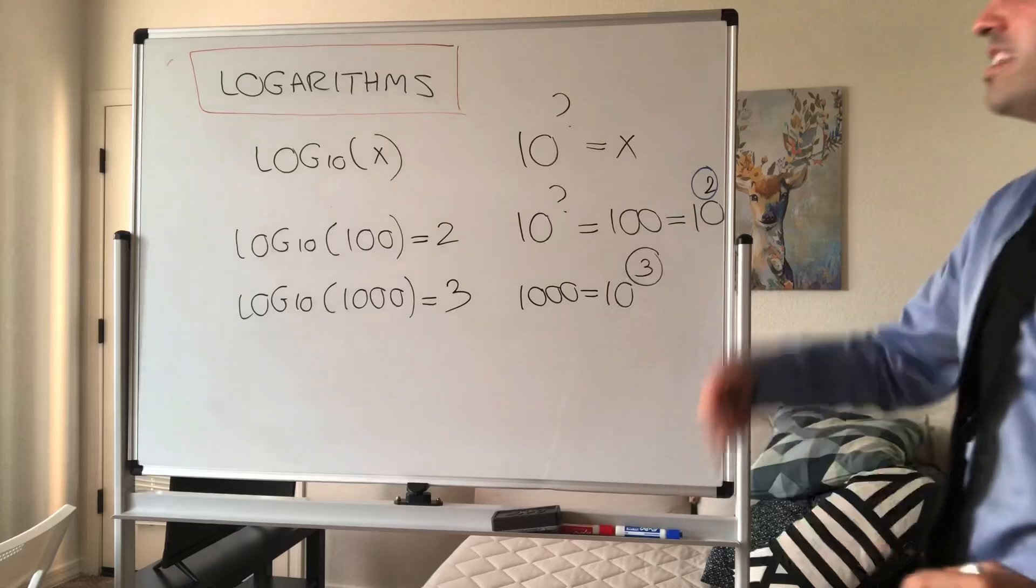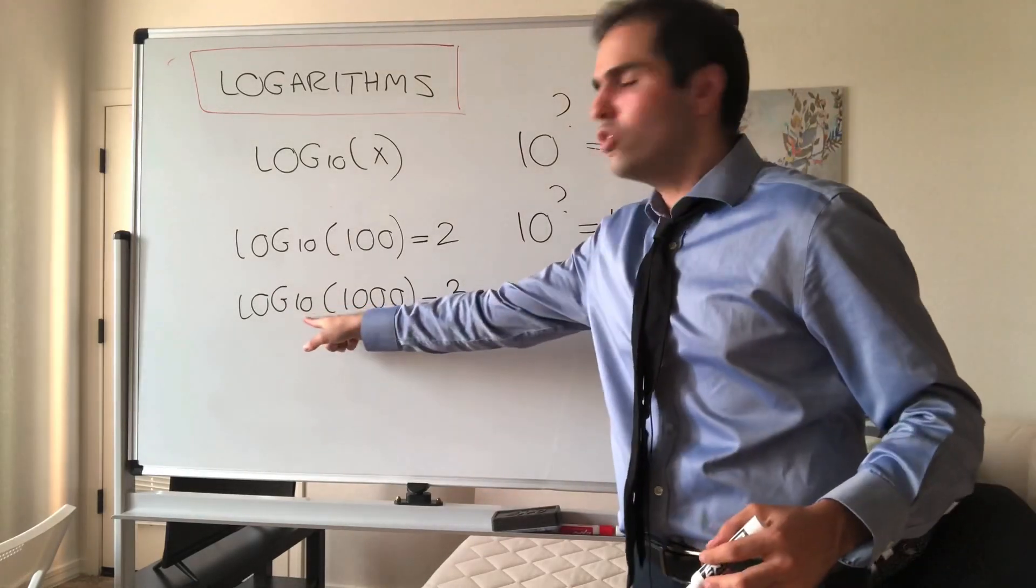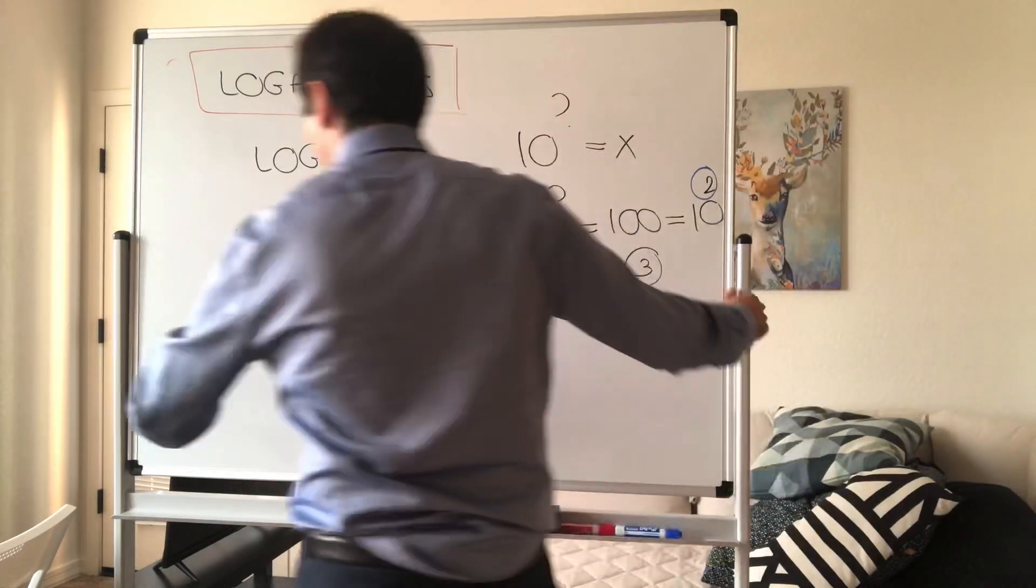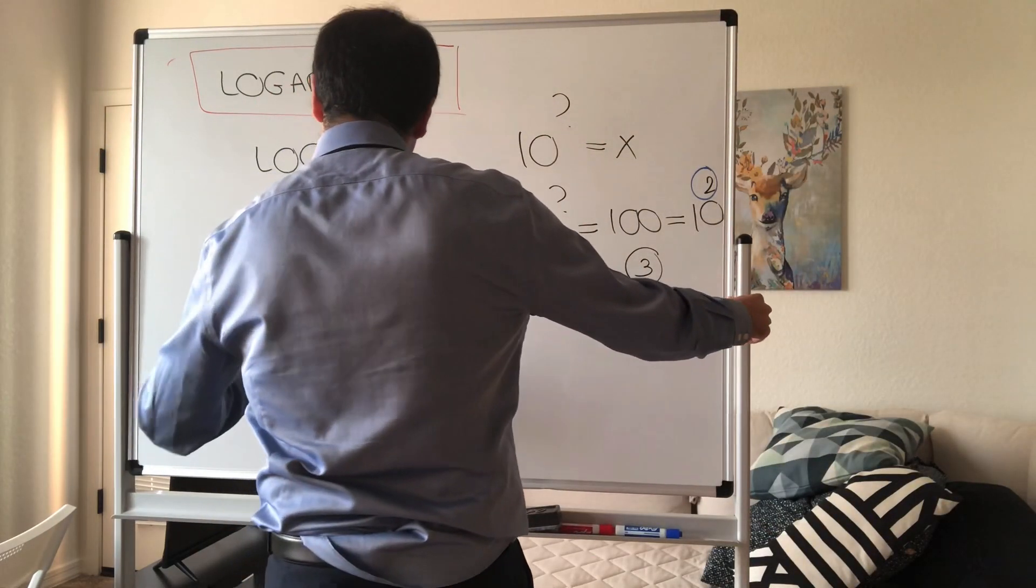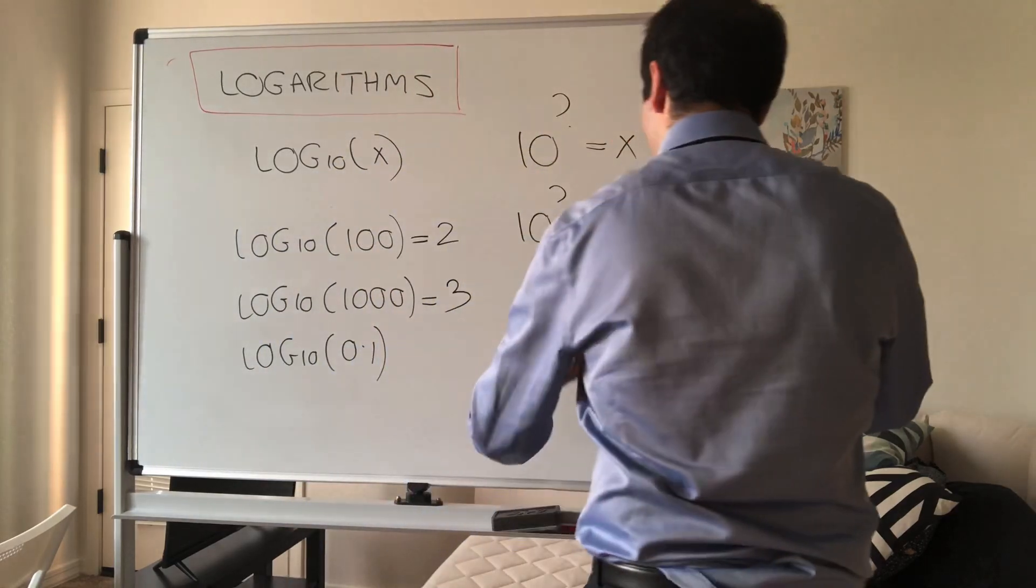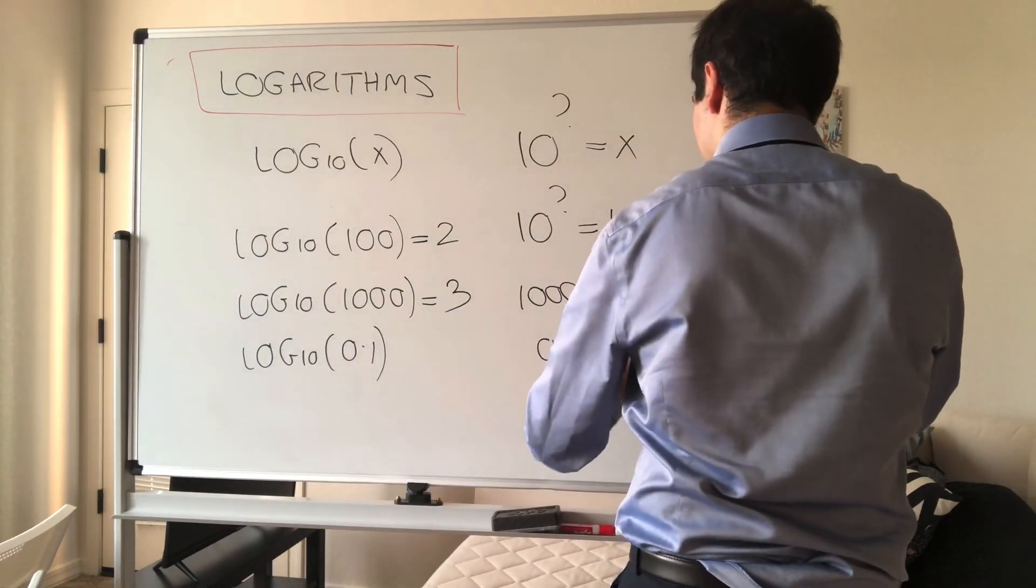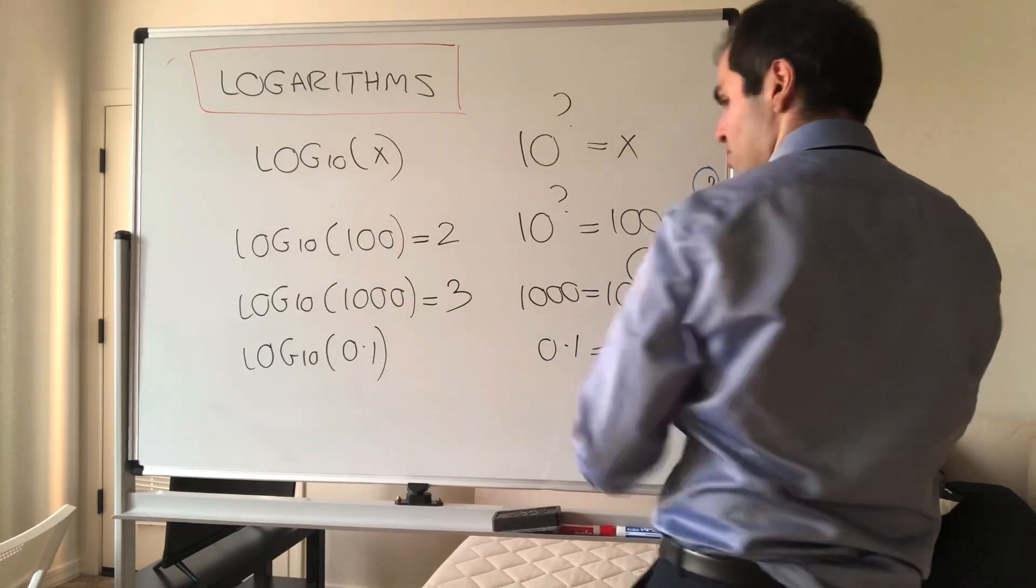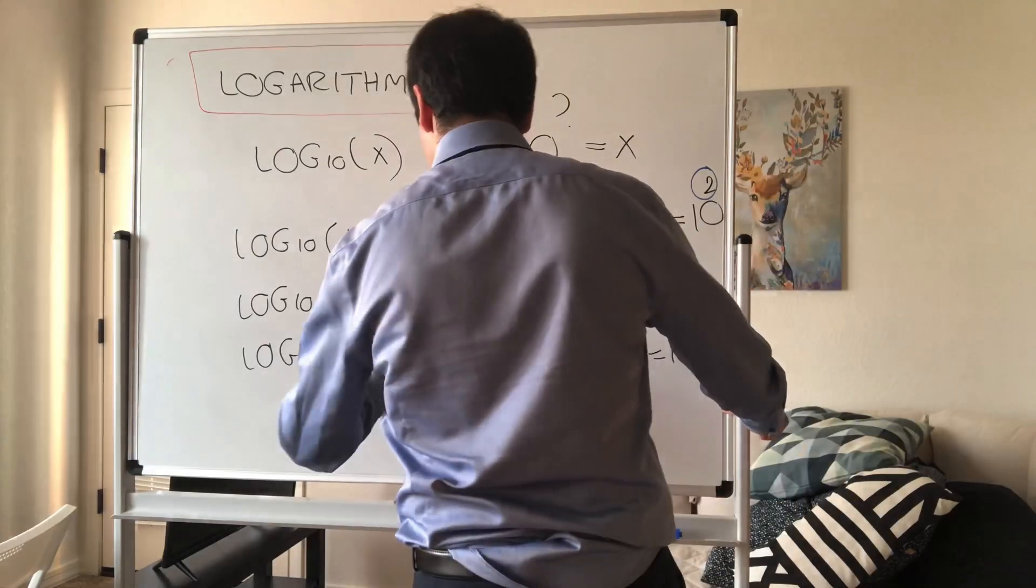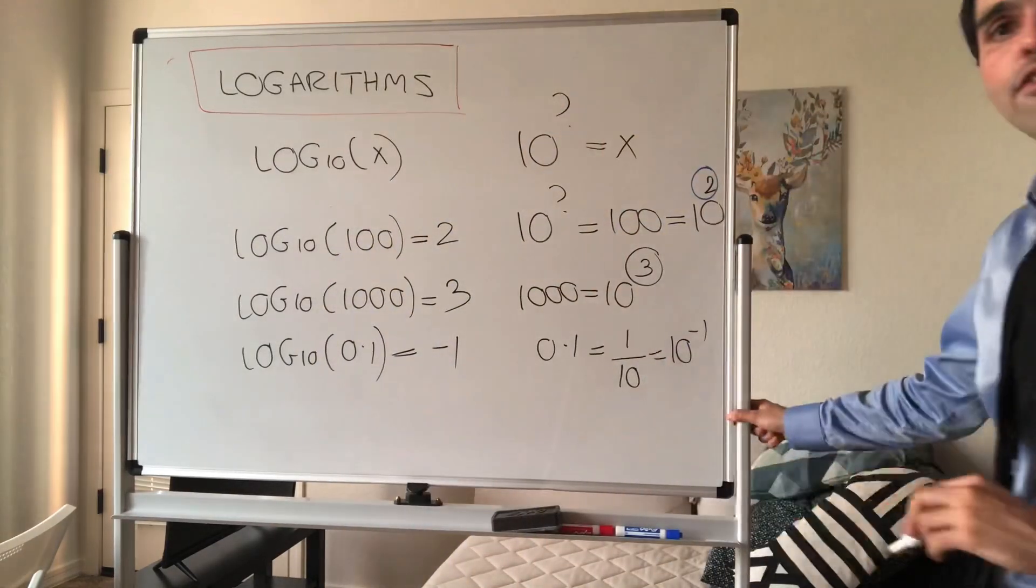Again, it's the exponent you have to raise 10 to to get whatever number you have. Or how about log base 10 of 0.1? Well, 0.1 is 1/10 and that's 10 to the minus 1, so the answer is minus 1. It could definitely be negative.